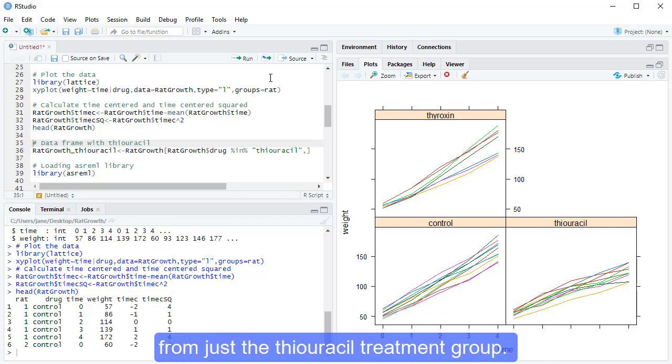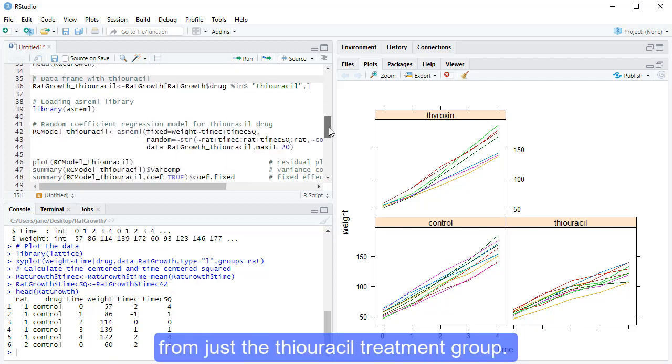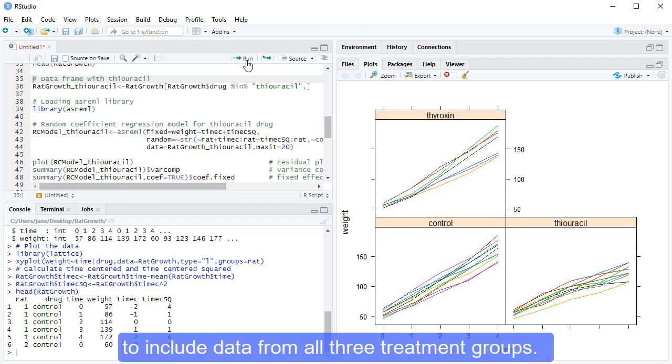For illustration, we'll begin by analysing the data from just the thiouracil treatment group. We'll then expand this model to include data from all three treatment groups.